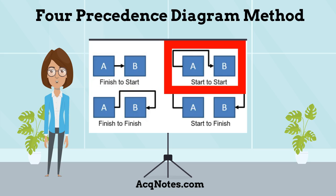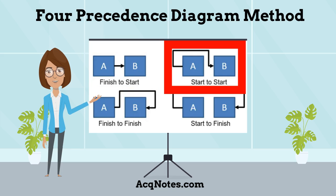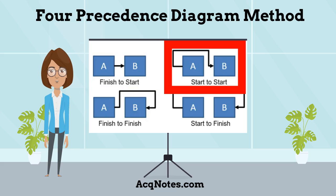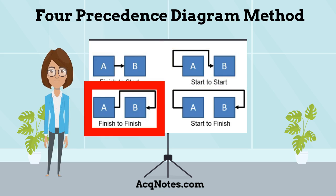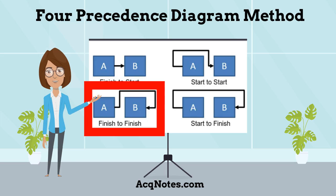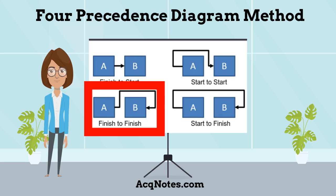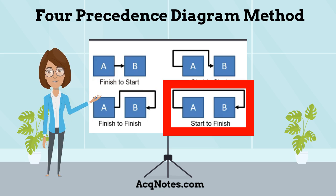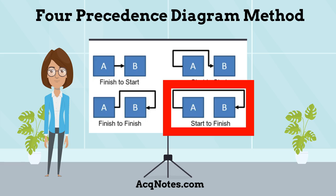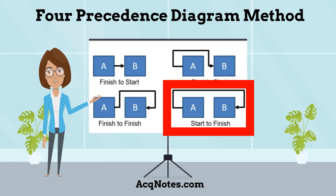Start to start — in this dependency, there is a defined relationship between the start of activities. Finish to finish — in this dependency, there is a defined relationship between the end dates of activities. And finally, start to finish — in this dependency, there is a defined relationship between the start of one activity and the end date of a successor activity. This dependency is rarely used.